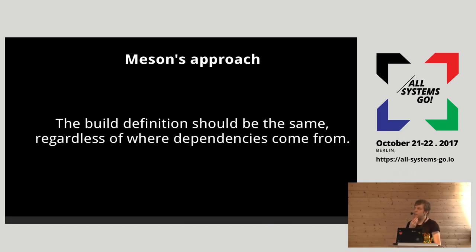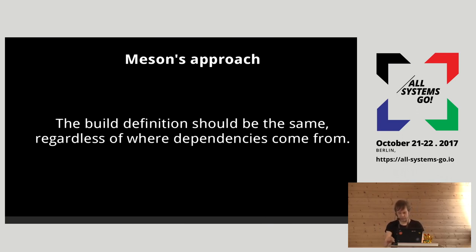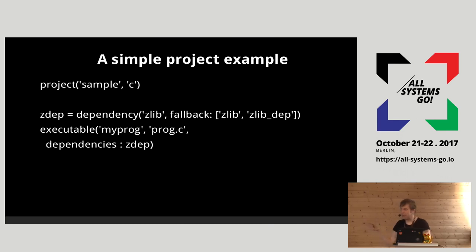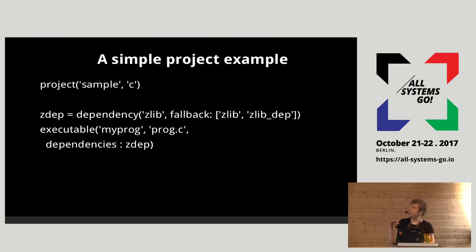In Meson, we have a proposal for this: the build definition for your project should be identical regardless of where the dependencies come from. In the middle line with zlib: there's a dependency on zlib, and then it says 'fallback'. You look up zlib on the system — if it's available use that one, if not get it from a subproject called zlib. The zlib_dep is the internal dependency defined inside that subproject. Your executable uses zlib_dep and it doesn't matter where it comes from — the build definition is the same.